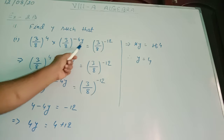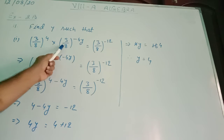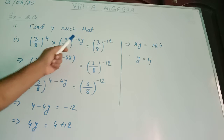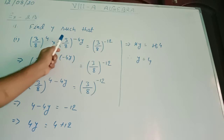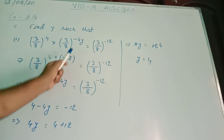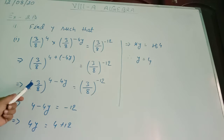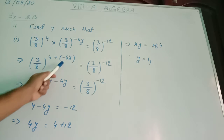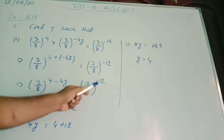This portion is LHS and that portion is RHS. These bases are given in the form of multiplication, so the powers will be added following the rule of exponents. So I wrote 3/8 to the power (4 + (-4y)) equal to 3/8 to the power -12. I have omitted the bracket: plus minus -4y equal to 3/8 to the power -12.